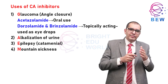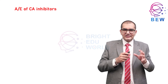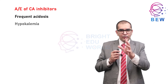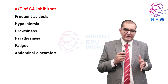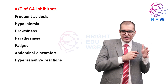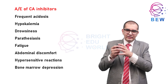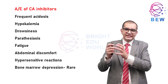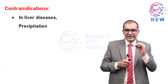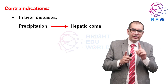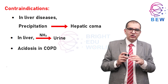Adverse effects of this class include: frequent acidosis, hypokalemia, drowsiness, paresthesia, fatigue, and abdominal discomfort. There are also hypersensitivity reactions such as fever and rash, and rarely bone marrow depression. These drugs are contraindicated in liver disease, as they may precipitate hepatic coma by interfering with urinary elimination of NH3. Acidosis is more likely in patients with COPD.